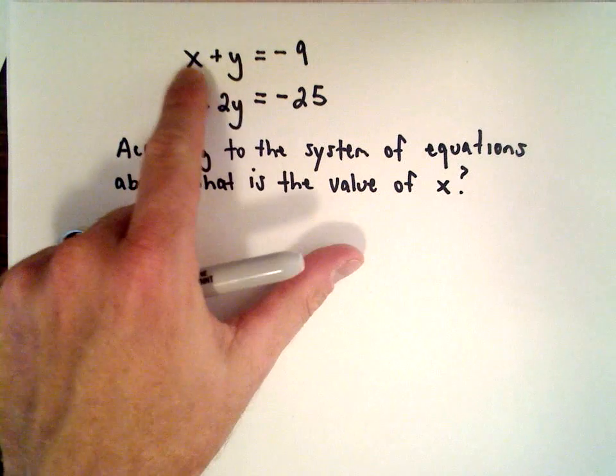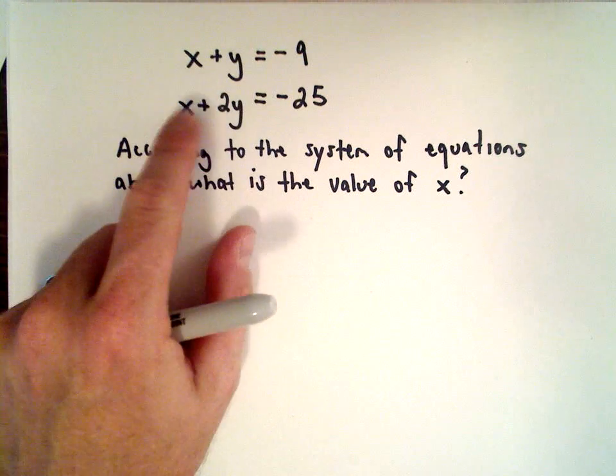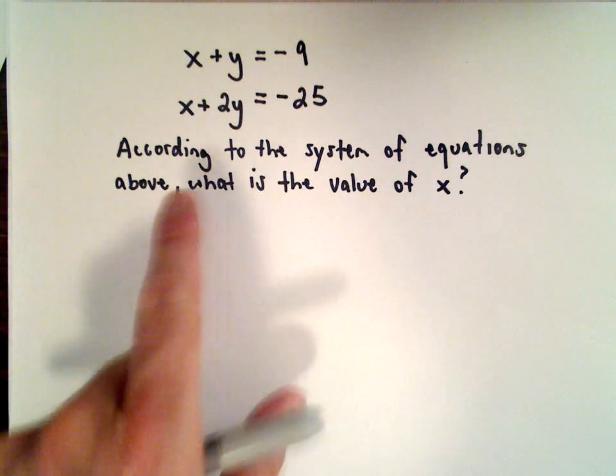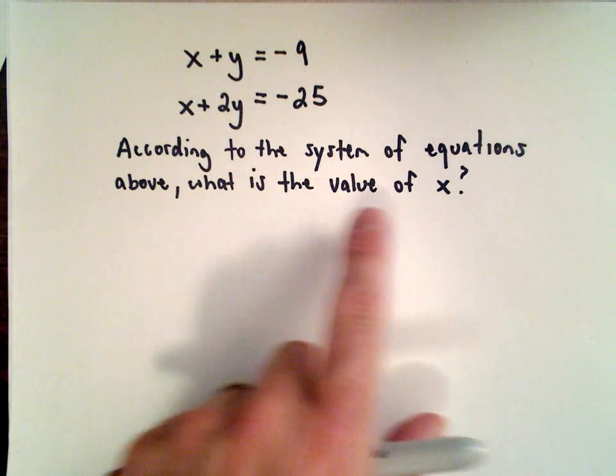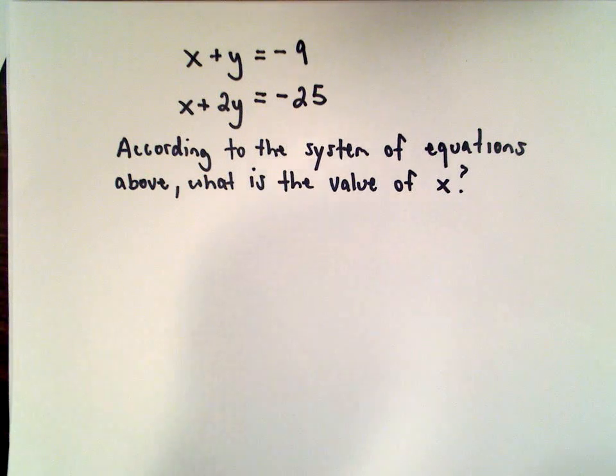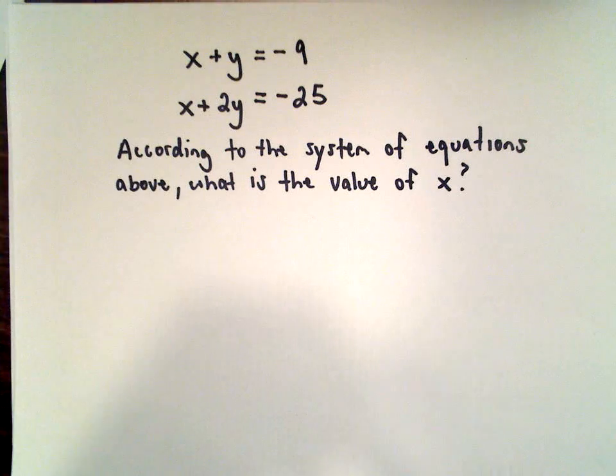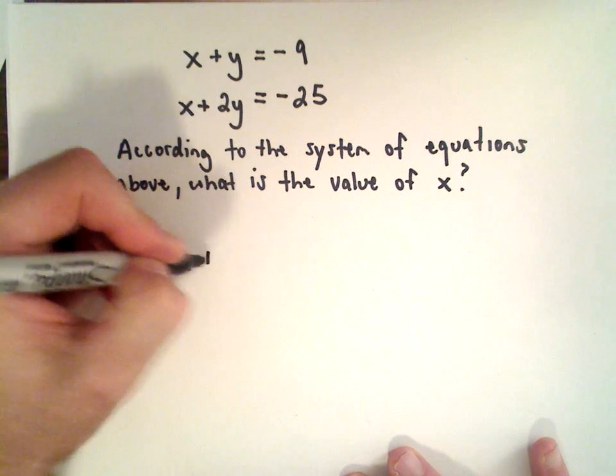In this question, we're given the system of equations x plus y equals negative 9 and x plus 2y equals negative 25. We want to know, according to the system of equations, what is the value of x? So we don't have to figure out the complete solution x and y, just x.